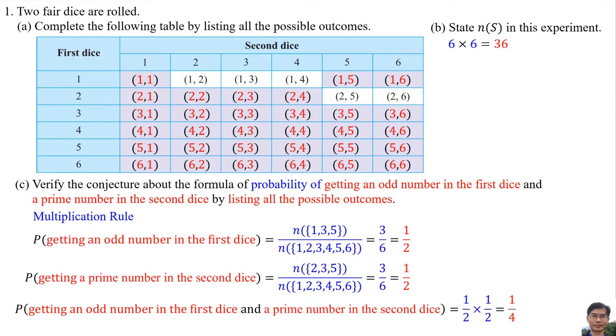When using the Multiplication Rule, the probability of getting an odd number on the first dice and a prime number on the second dice equals 1 per 2 times 1 per 2, which equals 1 per 4.